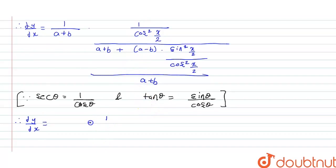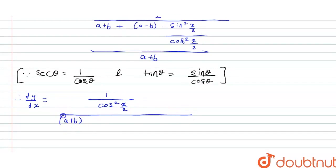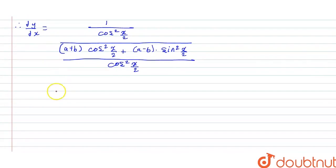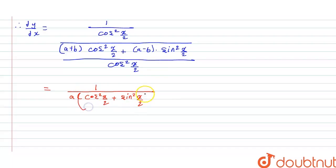So dy/dx equals 1 upon cos square x by 2, whole upon: this will become a plus b into cos square x by 2, plus a minus b into sin square x by 2, whole by cos square x by 2. So this cos square x by 2 and this cos square x by 2 will get cancelled. In the next step we will have 1 upon — now we can take a common: we get cos square x by 2 plus sin square x by 2. Plus, taking b common: we get cos square x by 2 minus sin square x by 2.